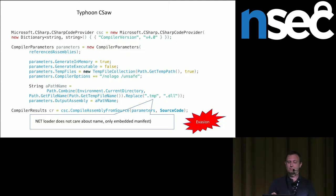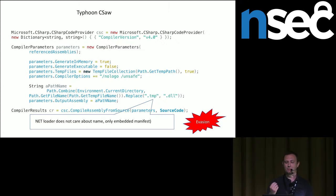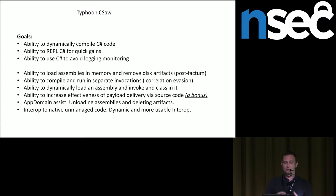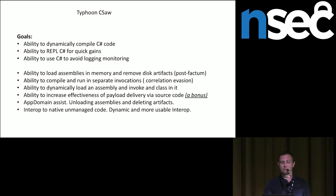There are certain things that can be evaded while you're compiling in CodeDOM. For example, if the Blue Team is detecting DLL drops on the file system, you can just replace DLLs with TMPs, because .NET has a property of not requiring you to compile to a DLL name — it will happily take a TMP name. So that's your evasion point right there. The goals for Seesaw beyond REPL are dynamic compilation of C# code, dynamic loading of assemblies into memory, and removing those disk artifacts.